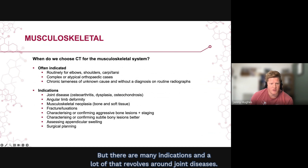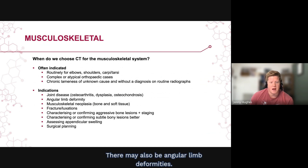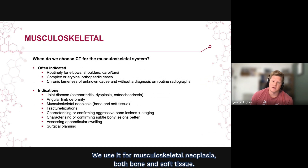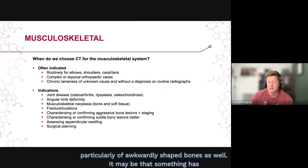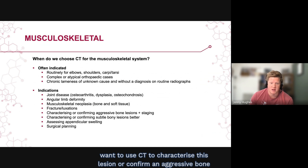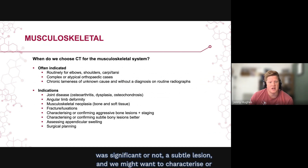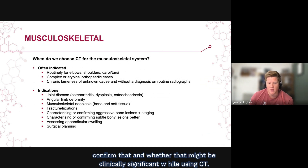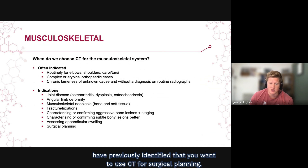There are many indications, and a lot revolves around joint disease. Many different types of joint disease can be accurately characterized on CT. There may also be angular limb deformities. We use it for musculoskeletal neoplasia — both bone and soft tissue — and in trauma cases where there may be complex fractures or fracture luxations, particularly of awkwardly shaped bones. It may be used to characterize or confirm an aggressive bone lesion seen on radiographs, and to stage the thorax. Subtle lesions of uncertain significance can also be further evaluated, and CT can be used for surgical planning of previously identified lesions, including apodicular swellings.